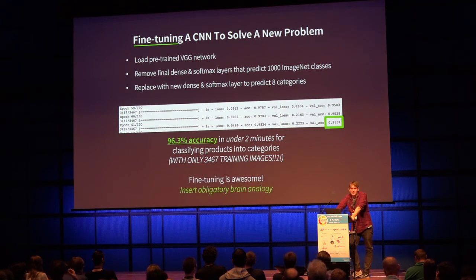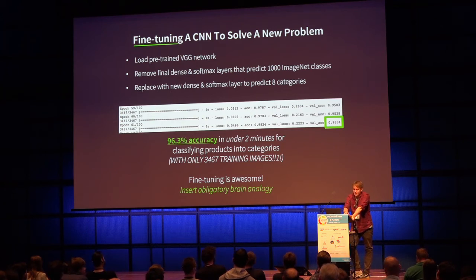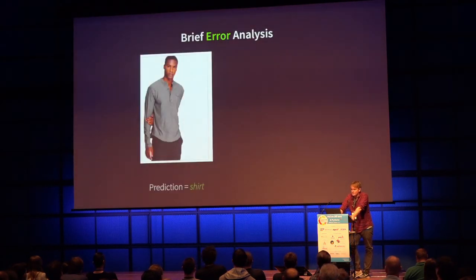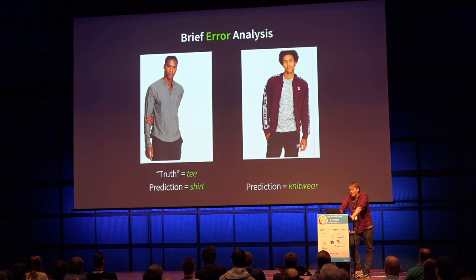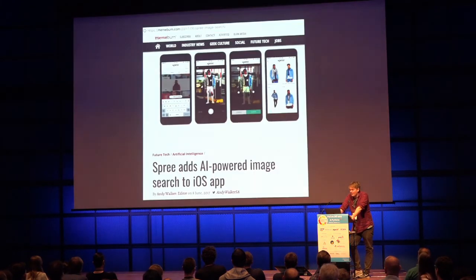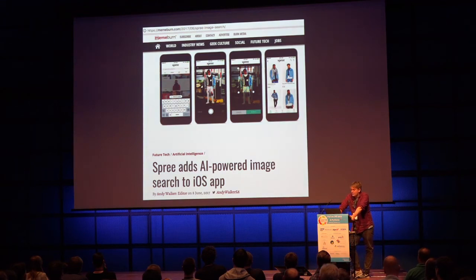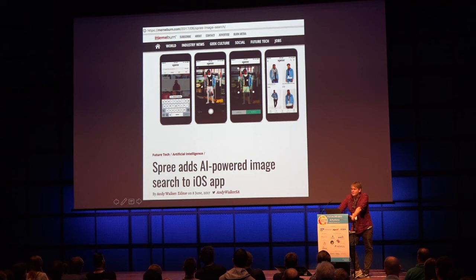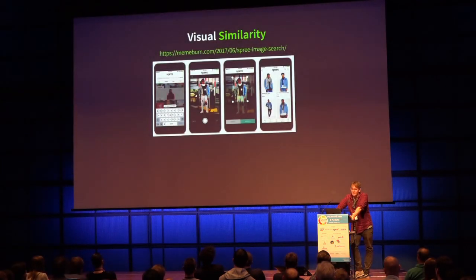There's an obligatory brain analogy here: you don't need to see 10,000 examples of an iPhone to know what it is — if you've seen other phones, you can bootstrap that information. Error analysis: the model predicted 'shirt' for a hipster t-shirt — I'll give it some leeway — and predicted 'cardigan' for something that actually was a jacket. What I was originally looking at was an e-commerce company's competitor feature where you could upload a photo and find similar-looking products. I got this working in about an hour.